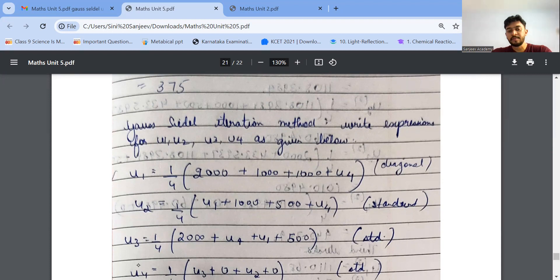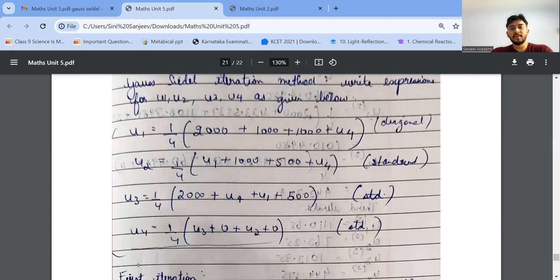So write down first, U1, U2, U3, U4. In the matrix, Gauss-Seidel, we have got X, Y, and Z, right? We'll calculate for X, Y, Z. And we'll put the initial iteration X equals 0, Y equals 0, Z equals 0. Same process, we have to do it.